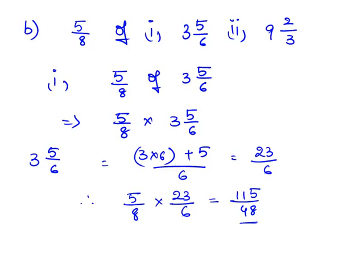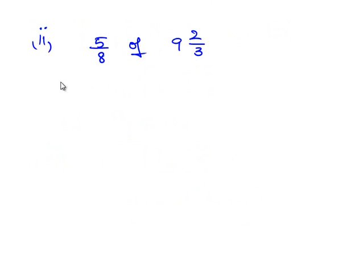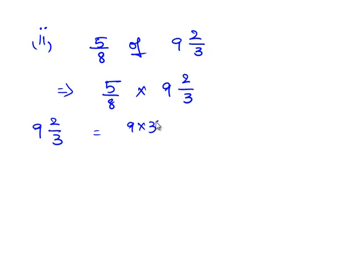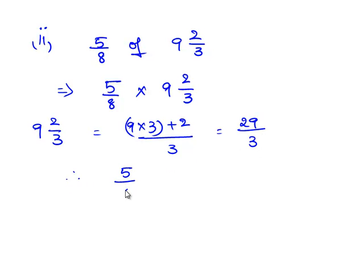Now let us come to the second bit. Here we need to find 5/8 of 9 2/3. 5/8 of 9 2/3 is nothing but 5/8 multiplied by 9 2/3. Since 9 2/3 is a mixed fraction, we convert it into improper form: (9 × 3 + 2) / 3 = (27 + 2) / 3 = 29/3. Therefore the expression becomes 5/8 × 29/3 = 145/24. Therefore 5/8 of 9 2/3 is equal to 145/24.